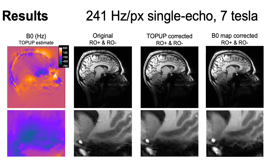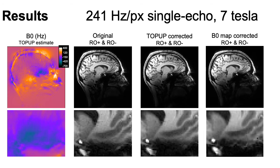For single echo data acquired at 7T, we see there is substantial distortion in the original opposite polarity images. Top-up can align those images quite successfully, and there are some residual artifacts in the B0 map correction.